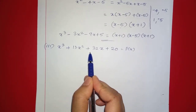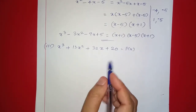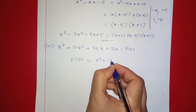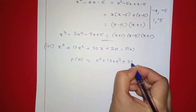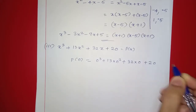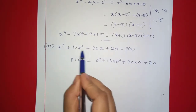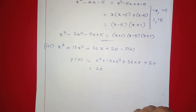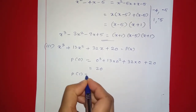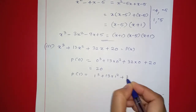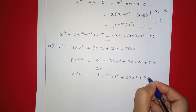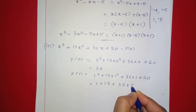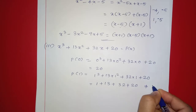Next question: x raised to 3 plus 13x squared plus 32x plus 20. P of 0 equals 20, so P of 0 is not 0. P of 1 equals 1 plus 13 plus 32 plus 20, which is positive and not equal to 0.